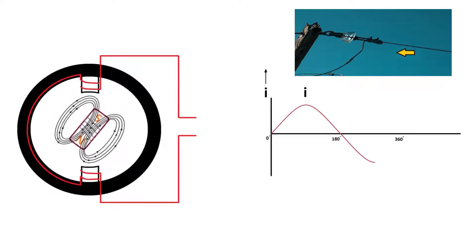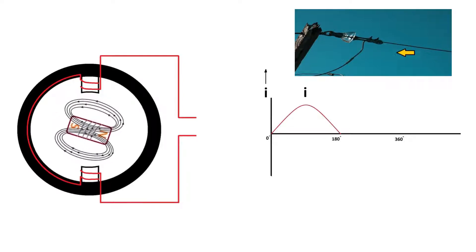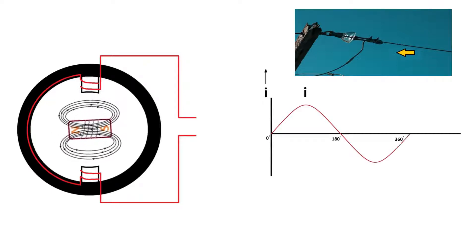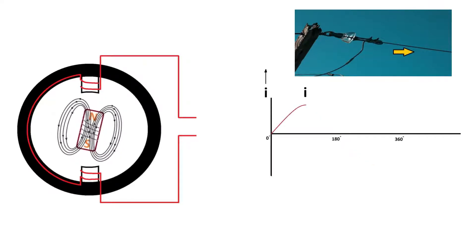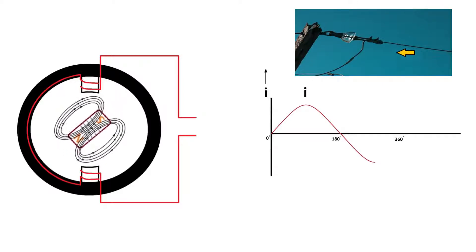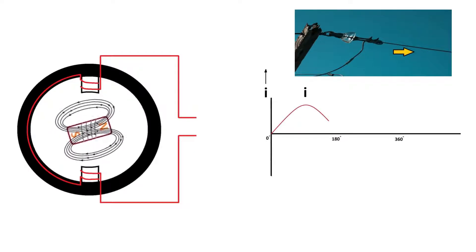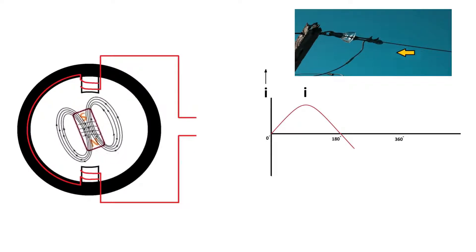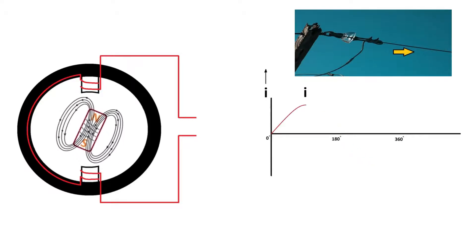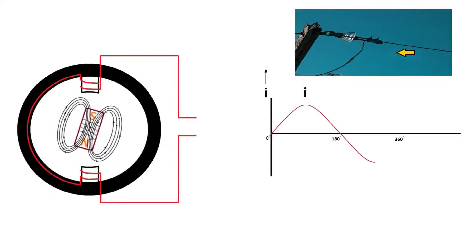This is how alternating current is sinusoidal in nature. The speed of the electron starts from zero, reaches the maximum, again reaches zero, then again reaches the maximum in the opposite direction, and reaches zero. This happens in one complete rotation of the field winding, called one cycle. This rotor field winding rotates 50 times in one second for 50 hertz frequency, and 60 times in one second for 60 hertz frequency. Hence, the number of cycles of the rotor per second is called the frequency of power supply.